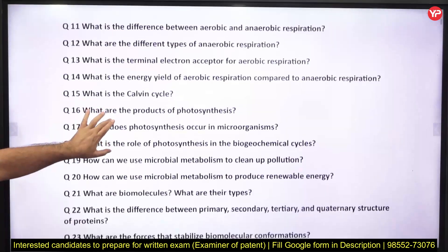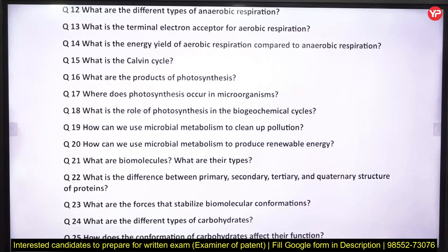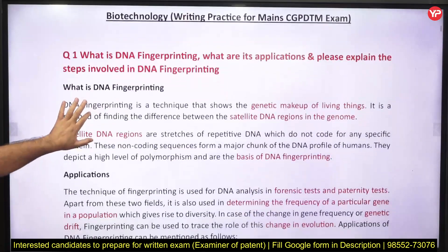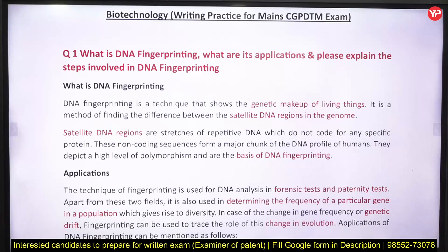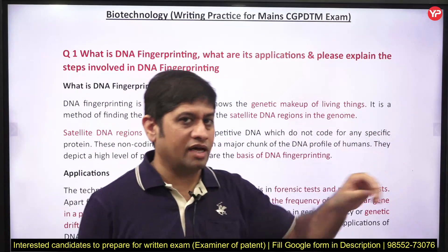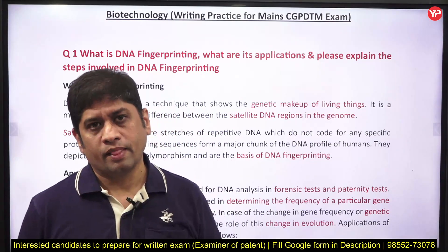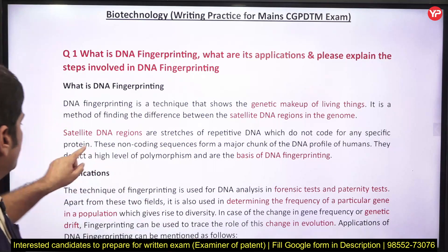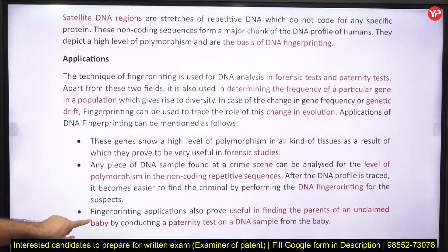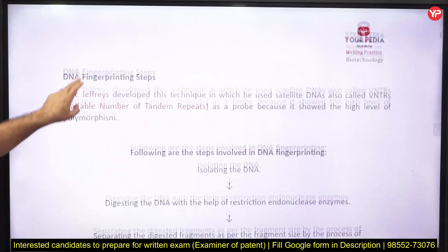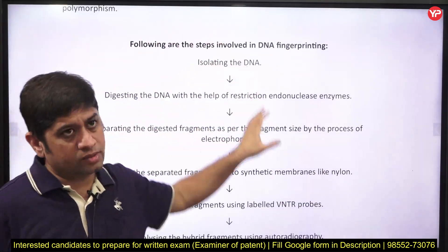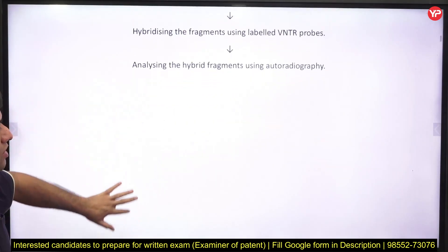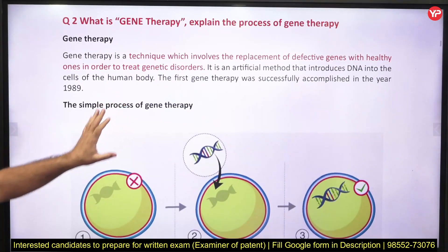Reference answers are made by the mentors for you. You have to read the question, try to write your answer, and compare it with the reference. What is marked in red is what you should highlight or underline. Writing skills involve many things: proper headings and subheadings, bullet points, tables where required, underlining, and making charts where a chart is needed.